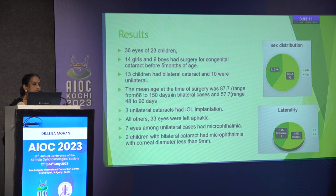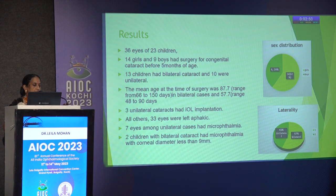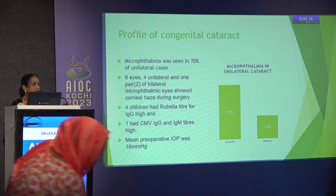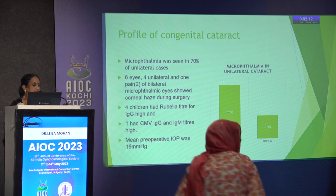There were 36 eyes of 23 children — 14 girls and 9 boys — who had surgery before 5 months of age. 13 children had bilateral cataract and 10 were unilateral. Mean age at surgery was 87.7 days for bilateral cases and 57.7 days for unilateral. 3 unilateral cataracts had IOL implantation; 33 eyes were left aphakic. 7 eyes among unilateral cases had microphthalmia. 6 eyes showed corneal haze before surgery, and 4 children had high rubella IgG titer while 1 had high CMV IgG and IgM titers.